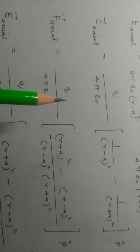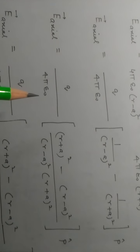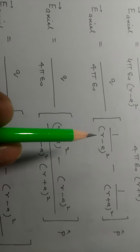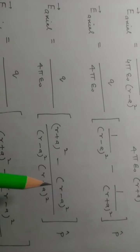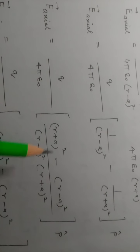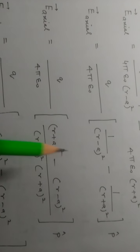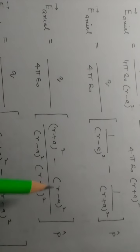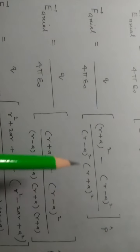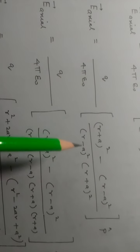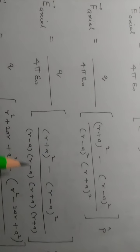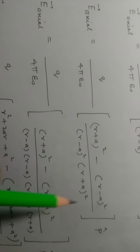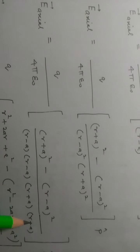E_xl is equal to q upon 4π epsilon. Taking LCM as (r minus a) squared times (r plus a) squared, the numerator becomes (r plus a) squared minus (r minus a) squared. We can write (r minus a) squared as (r minus a)(r minus a) and (r plus a) squared as (r plus a)(r plus a). When you combine (r minus a) with (r plus a), it becomes r squared minus a squared.